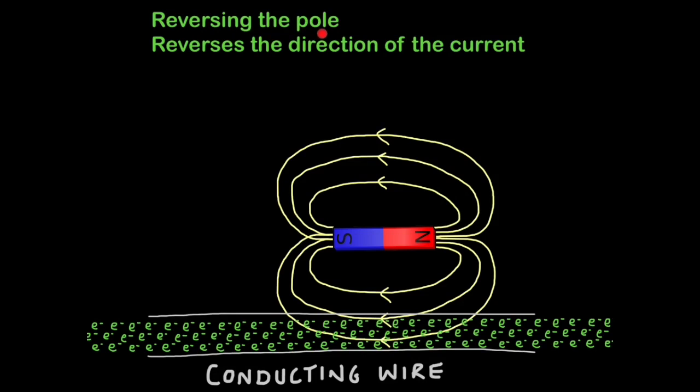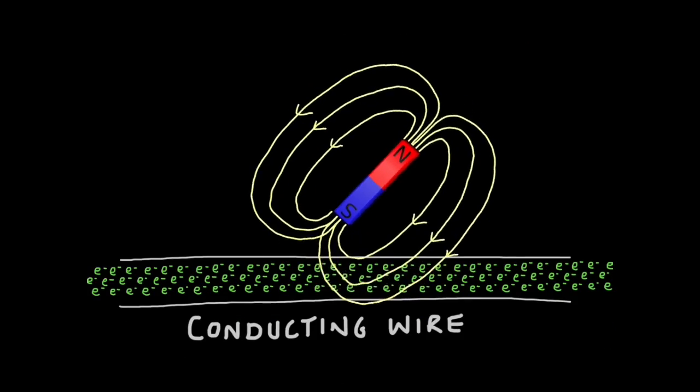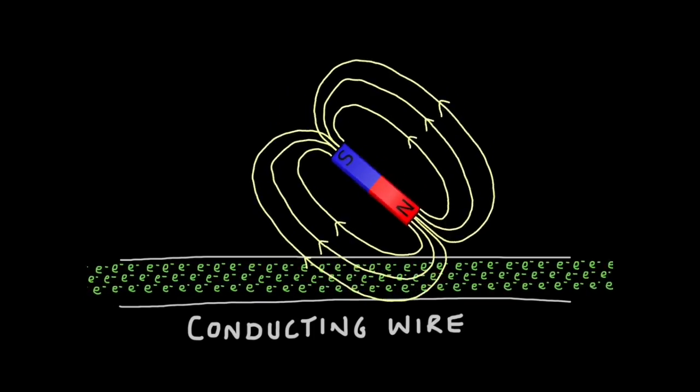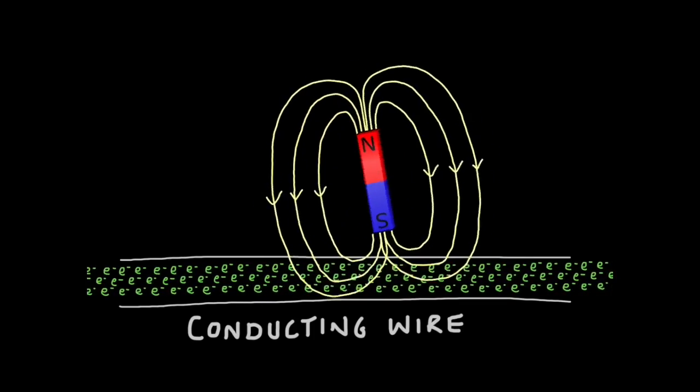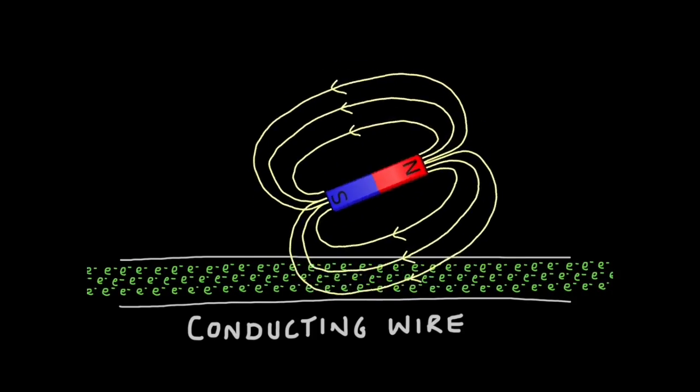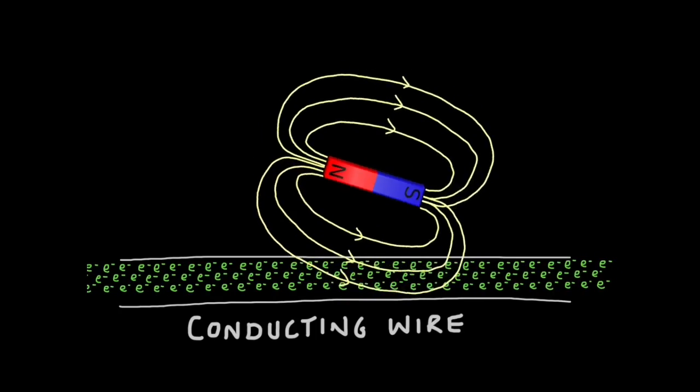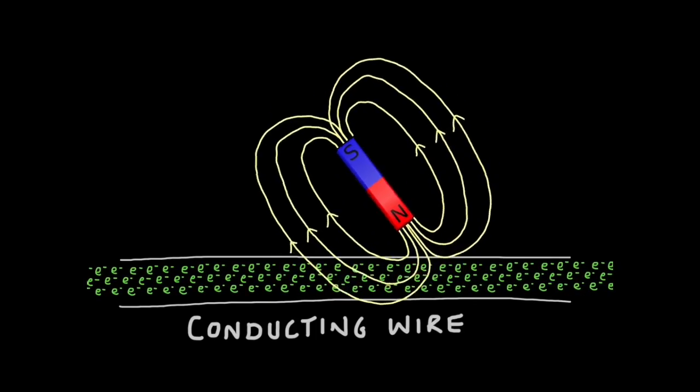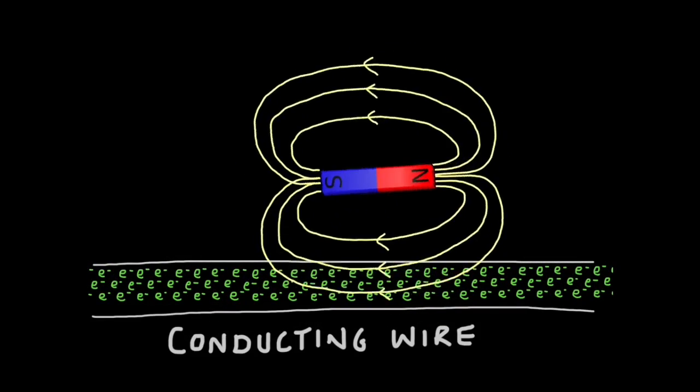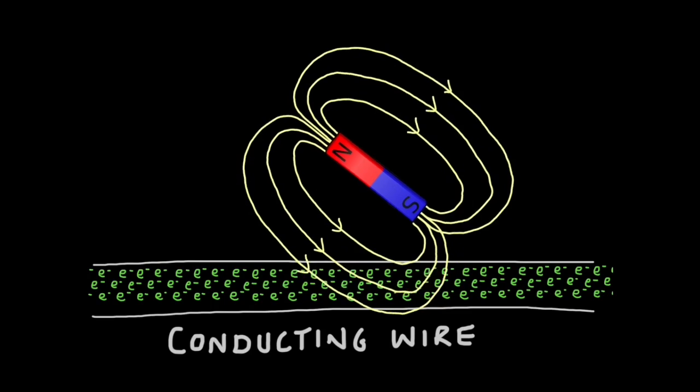So by reversing the pole we reverse the direction of the current. But I was manually moving the magnet. If we can find a way to move the magnet automatically, then we can produce an alternating current generator. The magnet doesn't need to move back and forth, rather it can rotate. And this causes the different pole field lines to cut the wire as well. The south pole moves this way, and the north pole moves the electrons this way, and so on. You can imagine if I sped this rotation up, the electric current would move faster.